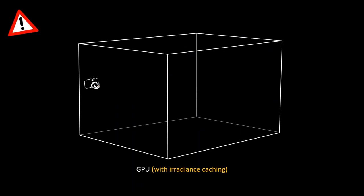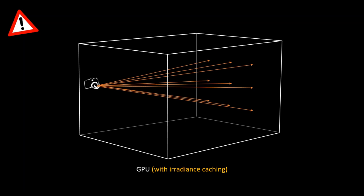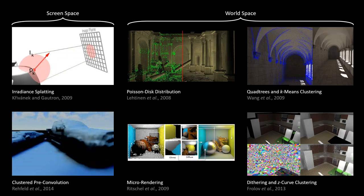This creates a problem on the GPU: because the method depends on prior information for each ray, when all rays are sent out in parallel there is no prior information to tell us which hit points need diffuse calculations. In computer graphics, other researchers have faced this problem and created solutions that work either in screen space (view-dependent) or in world space (applicable to multiple views once calculated).